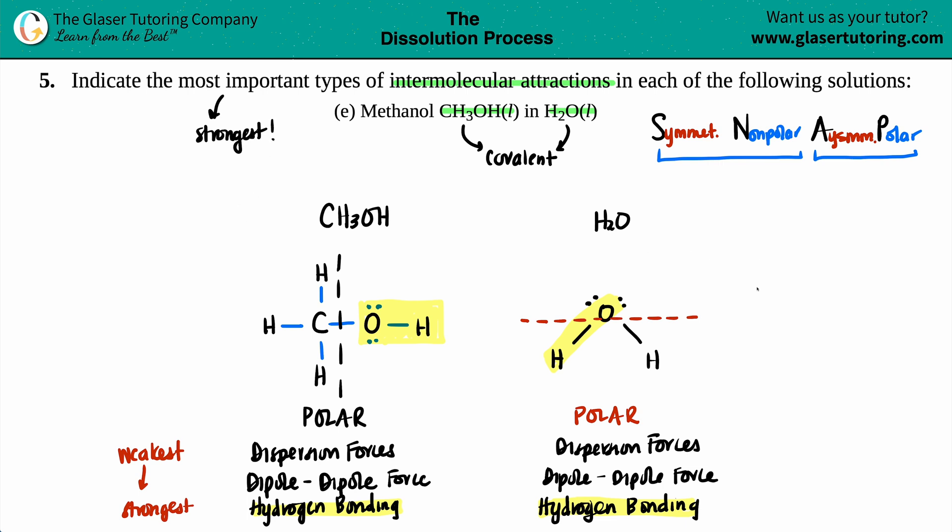The strongest intermolecular attraction between methanol and water is that hydrogen bonding because they both can exhibit that because they both have the OH bond. And that is it.